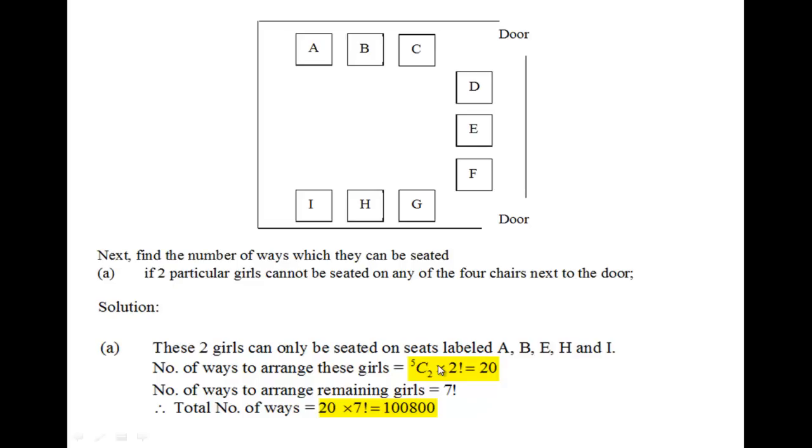So once we have fixed the two girls, we have actually seven seats remaining. In other words, these seven girls I can randomly allocate a seat for them, which gives us seven factorial if we permute them. So the total number of ways will be 20 multiplied by 7 factorial, which gives us 100,800.